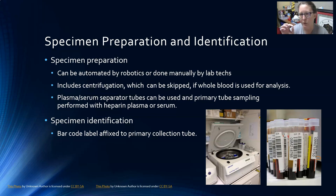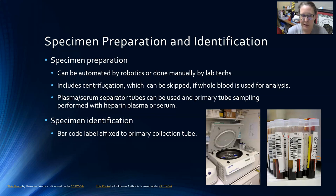The separator tubes are the tubes that have the SST — a gel at the bottom of the tube. When you centrifuge the tube, the gel moves between the red cells and the plasma or serum, and it allows for the preservation of the specimen in chemistry for longer periods of time and more stability for a lot of analytes.